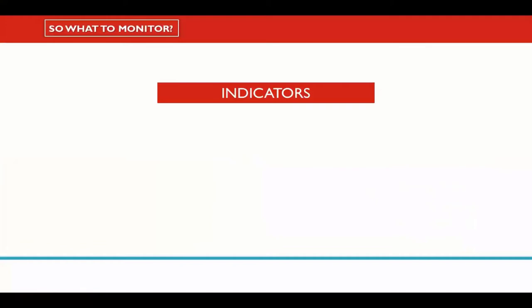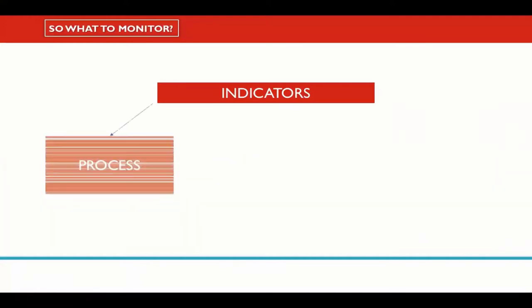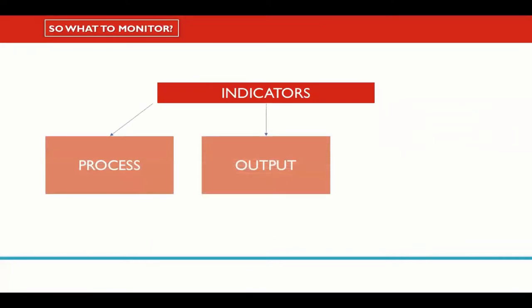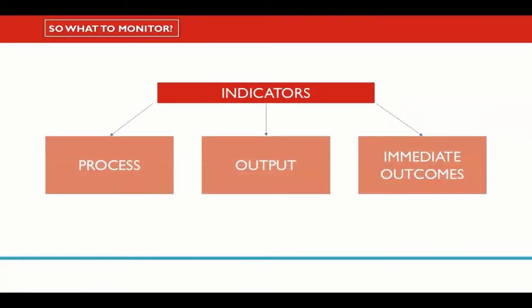MPC is one form of CVA, so much of the same general guidance applies, including the types of monitoring issues and indicators to consider at the process and output levels. Also, at the immediate outcome level to a large extent — for example, people's ability to spend the cash, where and how.